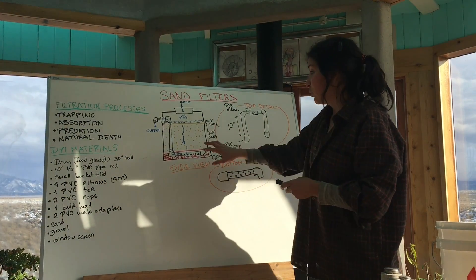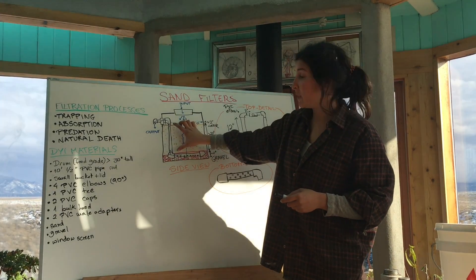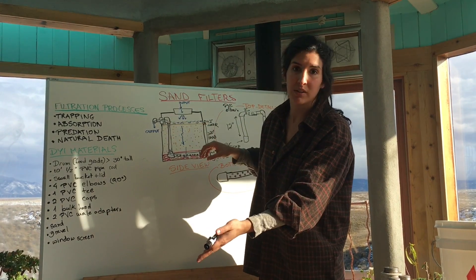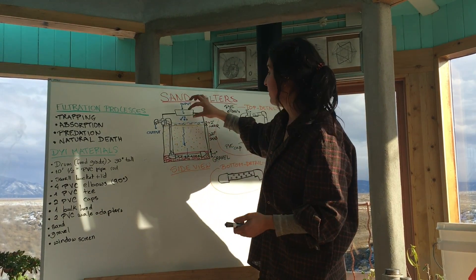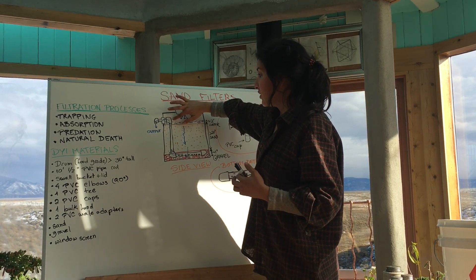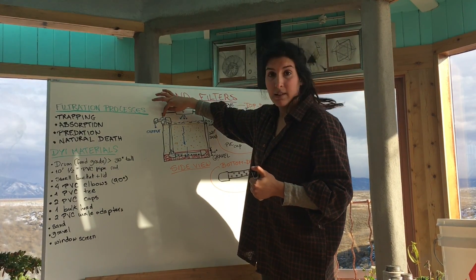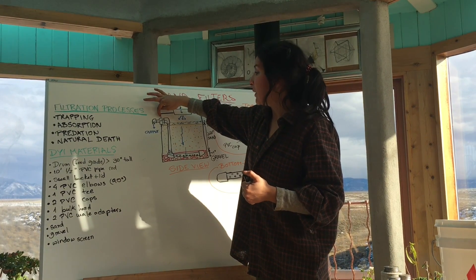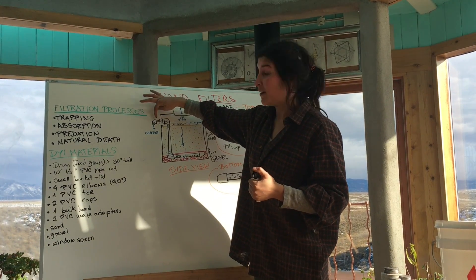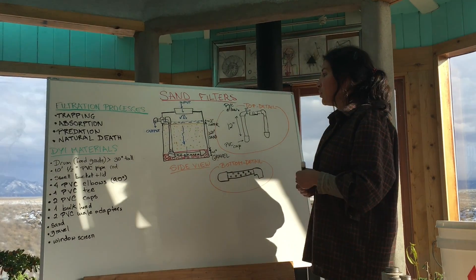Then you glue all the parts together: the big 25-inch PVC pipe (or bigger depending on the size of your drum — you'll adapt measurements), then an elbow, another 2-inch piece, the male adapter, the bulkhead, another male adapter, another 2-inch piece, and another elbow.